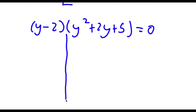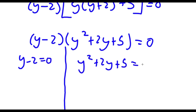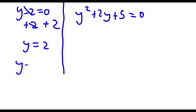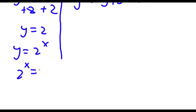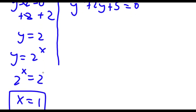So now this gives me two equations: y minus 2 is equal to 0, and y squared plus 2y plus 5 is equal to 0. For y minus 2 equals 0, all I have to do is add 2 on both sides — these two cancel out and I'm left with y is equal to 2. But remember y is equal to 2 to the power of x. Since we know y equals 2, I have 2 to the power of x equals 2, and the only possible value of x is 1. So this is one solution.